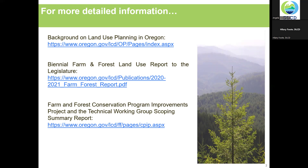The first is the Biennial Farm and Forest Land Use Report that DLCD provides to the legislature. The Biennial Farm and Forest Report looks at trends in conversion of resource lands to other uses through zone changes, urban growth boundary expansions, and through allowable non-farm or non-forest development approvals. The second resource is the recently published Technical Working Group Summary Report that attempts to identify and explain a number of technical issues with the Farm and Forest Program as well as a variety of potential solutions. Both of those reports are available on DLCD's website at the links shown here.